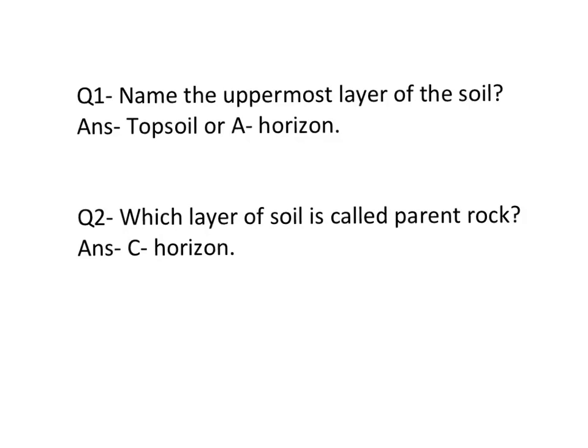Now children, let's discuss these two questions — you have to write them in your notebook as well. You will receive a PDF file at the end of the chapter for the question answers. The first question is: name the uppermost layer of the soil. The answer is topsoil, or you can call it the A horizon. The second question: which layer of soil is called parent rock? The answer is the C horizon. I hope you enjoyed the video. We will meet in the next video. Till then, keep smiling, take care, and enjoy your day.